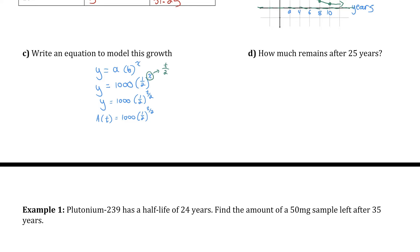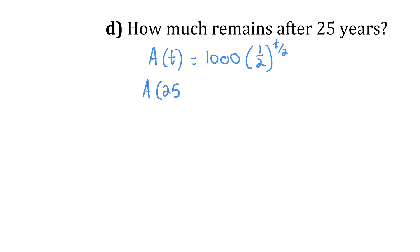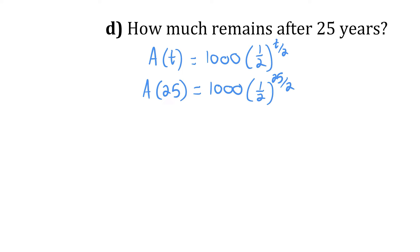Let's use that equation to find how much remains after 25 years. I sub in t = 25. In 25 years it's not cut in half 25 times — it only gets cut in half once every two years. My exponent 25 over 2 means it's cut in half 12.5 times. Evaluating on a calculator gives about 0.173 milligrams remaining.